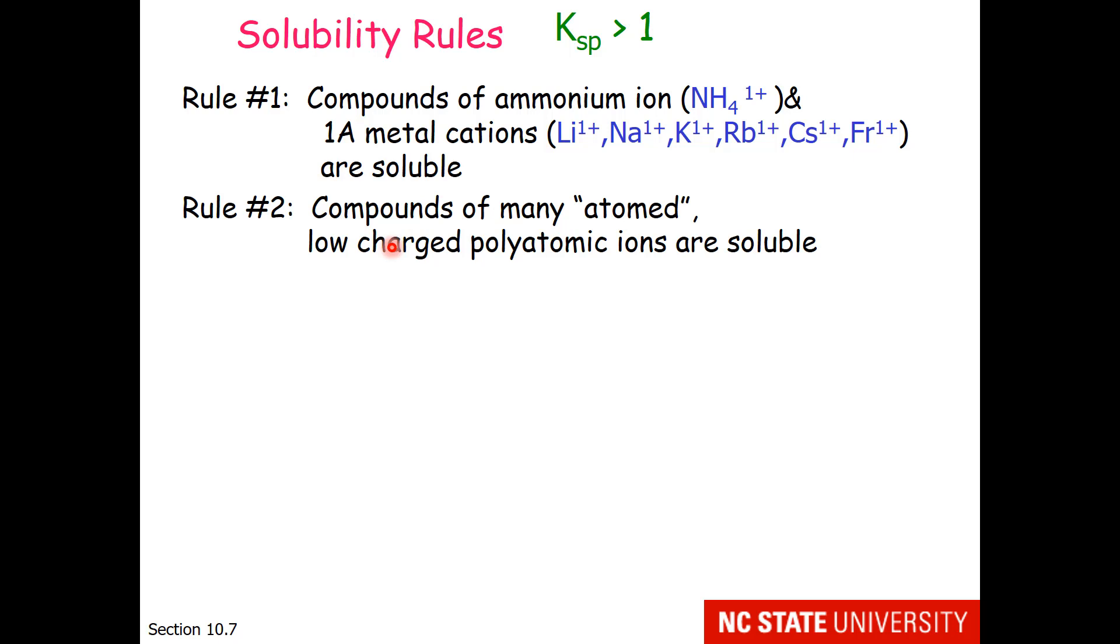Rule 2: Compounds of many-atomed low-charge polyatomic ions are soluble. Meaning, something with acetate, like zirconium 4 acetate, is soluble. These low-charge polyatomics include acetate, perchlorate, chlorate, and nitrate.